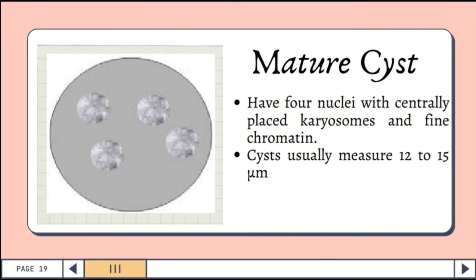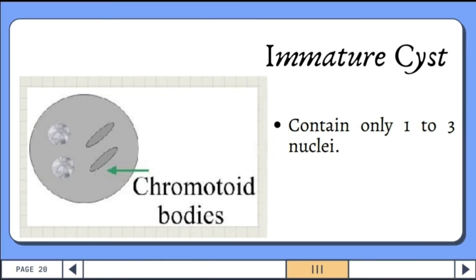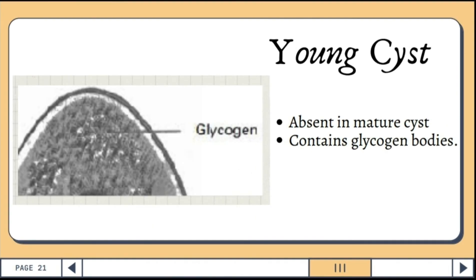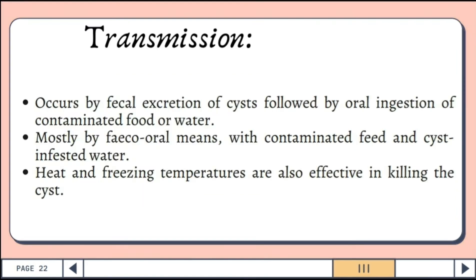In the mature form of cysts, it has four characteristic nuclei with centrally placed karyosomes and fine, uniformly distributed peripheral chromatin. Cysts usually measure 12 to 15 micrometers, and the mature cyst is a cystic stage of a parasite within a host. Immature cysts typically have a large glycogen vacuole and contain only one to three nuclei. In young cysts, it contains glycogen bodies that are absent in mature cysts. Transmission of cysts occurs by fecal excretion followed by oral ingestion of contaminated food or water.